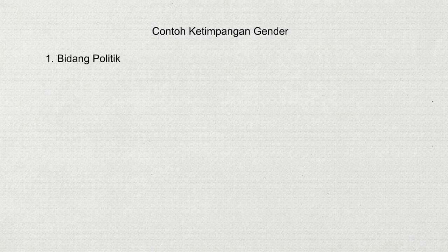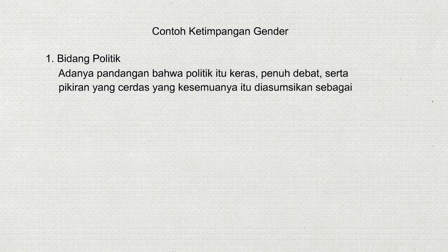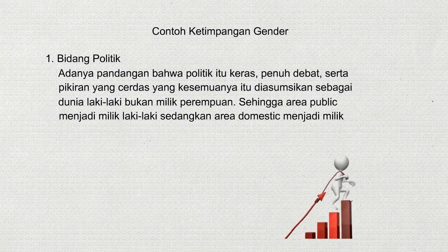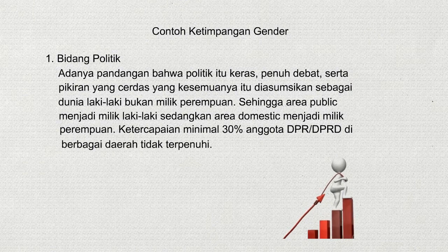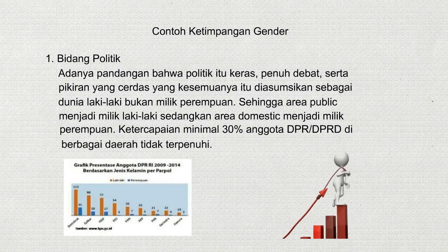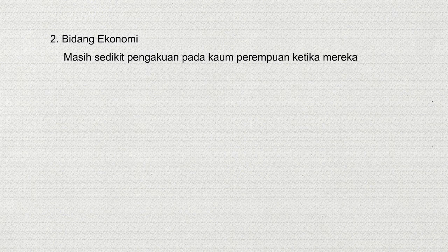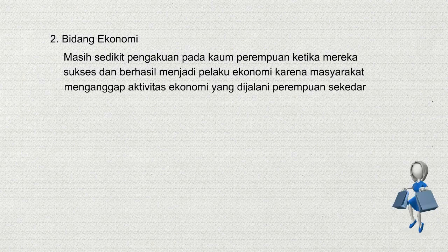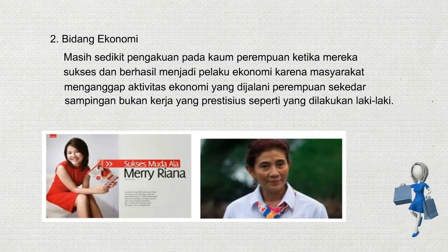Contoh ketimpangan gender: 1. Bidang politik. Adanya pandangan bahwa politik itu keras, penuh debat, serta pikiran yang cerdas, yang kesemuanya diasumsikan sebagai dunia laki-laki bukan milik perempuan. Sehingga area publik menjadi milik laki-laki sedangkan area domestik menjadi milik perempuan. Ketercapaian minimal 30% anggota DPR-DPRD di berbagai daerah tidak terpenuhi. 2. Bidang ekonomi. Masih sedikit pengakuan pada kaum perempuan ketika mereka sukses menjadi pelaku ekonomi, karena masyarakat menganggap aktivitas ekonomi yang dijalani perempuan sekedar sampingan, bukan kerja yang prestisius seperti yang dilakukan laki-laki.